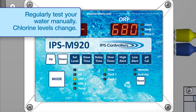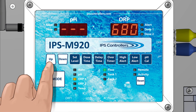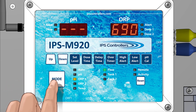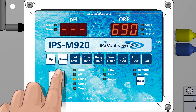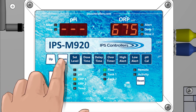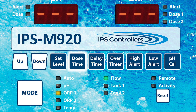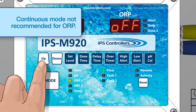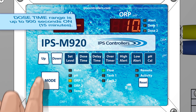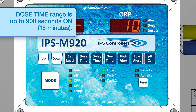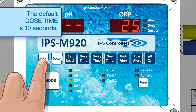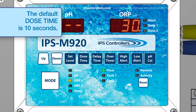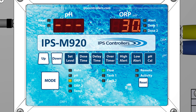If a future manual water test shows a PPM reading that is lower than desired, increase the ORP set level by 5 to 10 millivolts. If the ORP reading is too high, lower the set level. Press the Dose Time button and using the Up or Down buttons, set the dose time to off, continuous, or timed up to 900 seconds on. To avoid overdosing, start with a lower dose time and adjust up to maintain the set level.